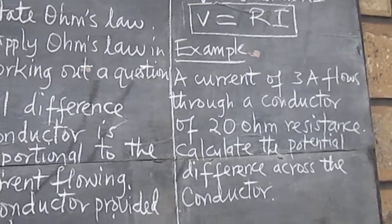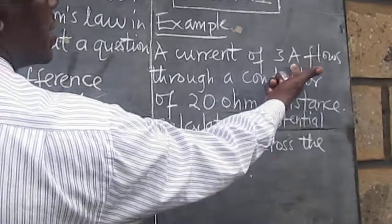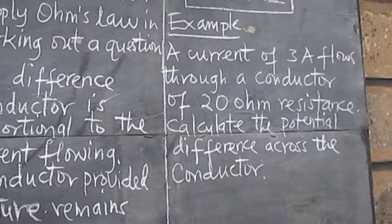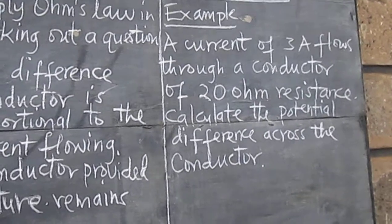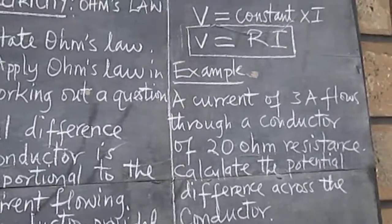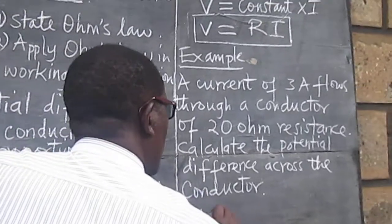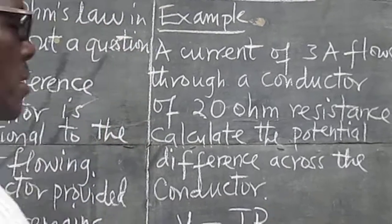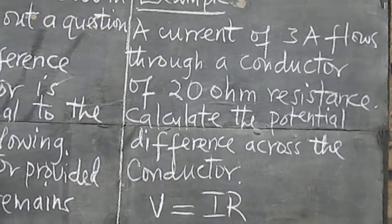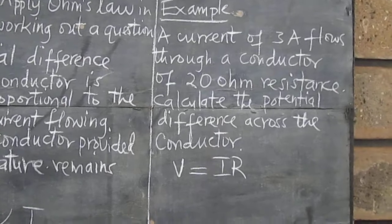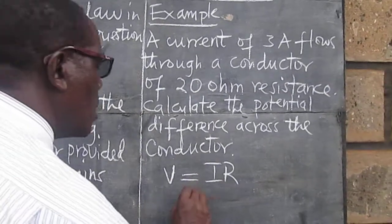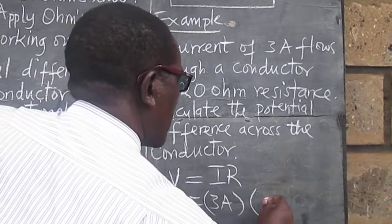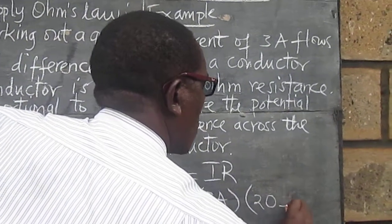We need to identify what is given. In this case, the current is given and the resistance is given. We now apply the formula: V equals IR. That is 3 amperes multiplied by 20 ohms.